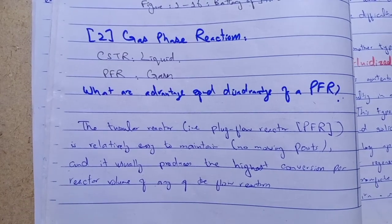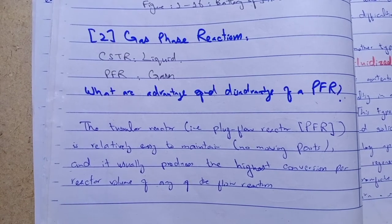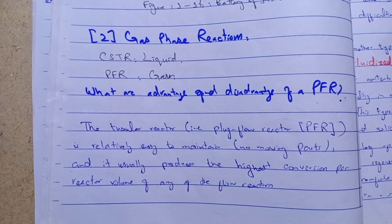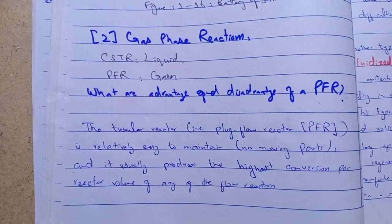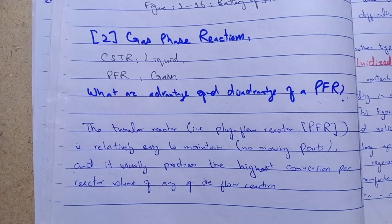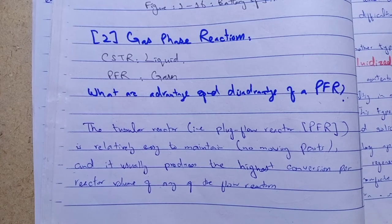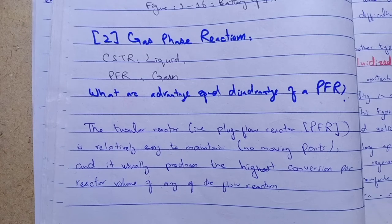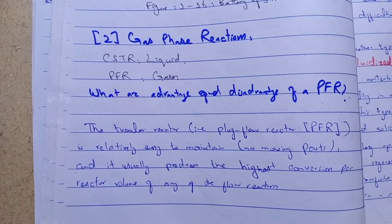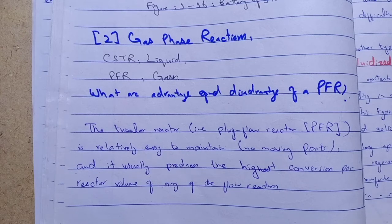The advantages of the PFR — the tubular reactor, also known as the plug flow reactor — are that it is relatively easy to maintain with no moving parts, and it usually produces the highest conversion per reactor volume of any flow reactor. This is the biggest advantage of a PFR.